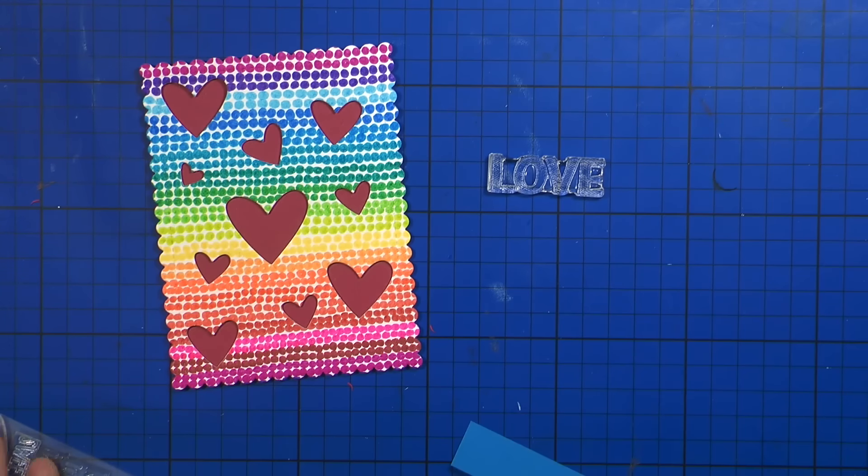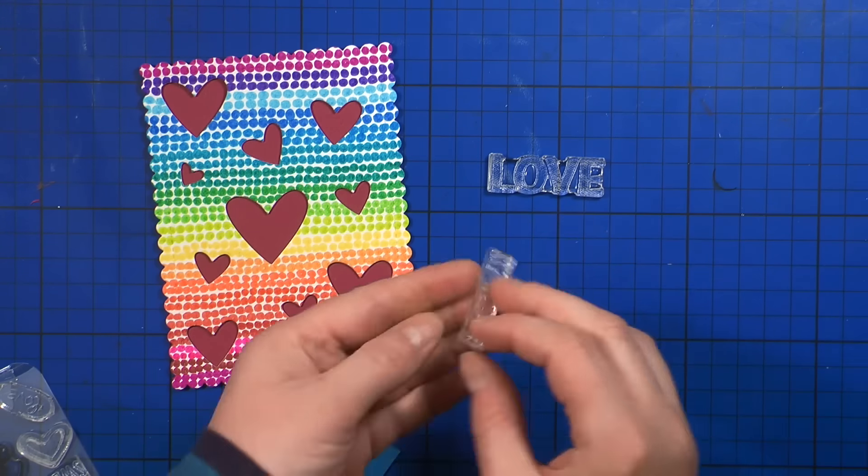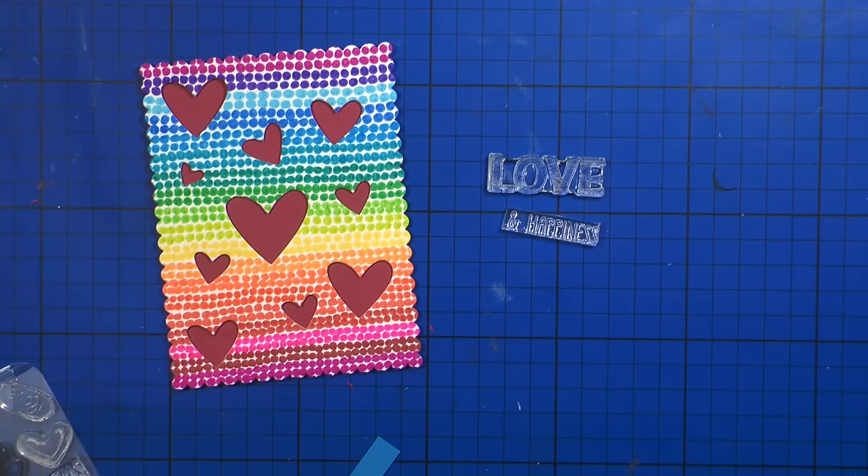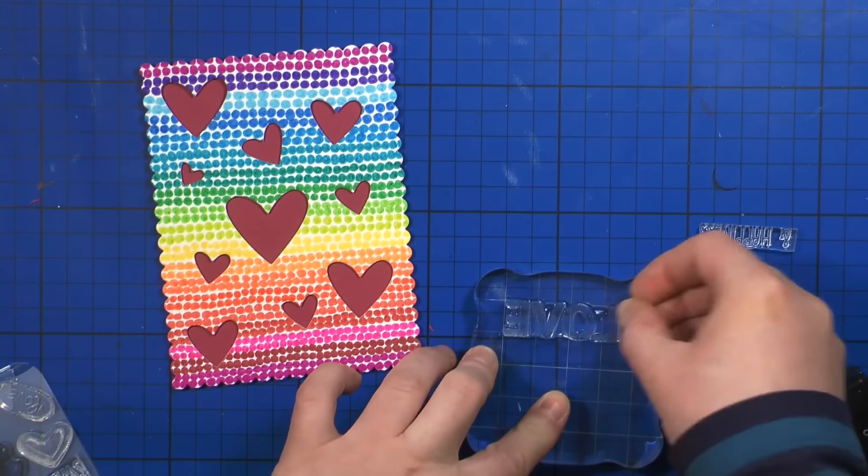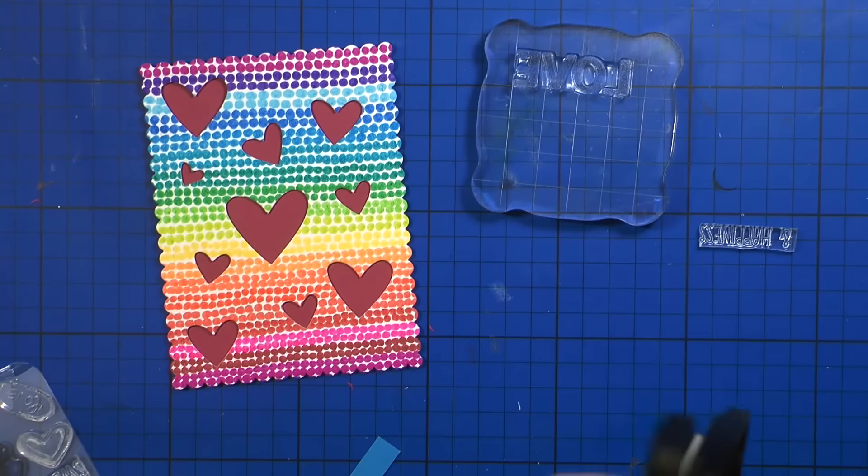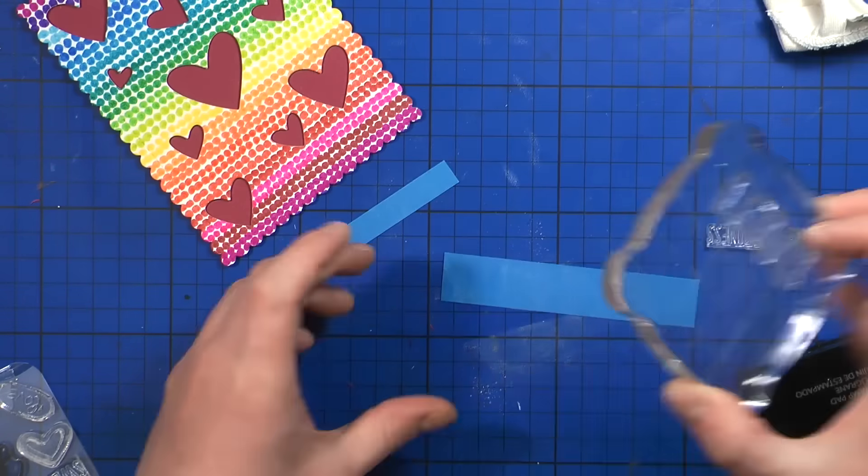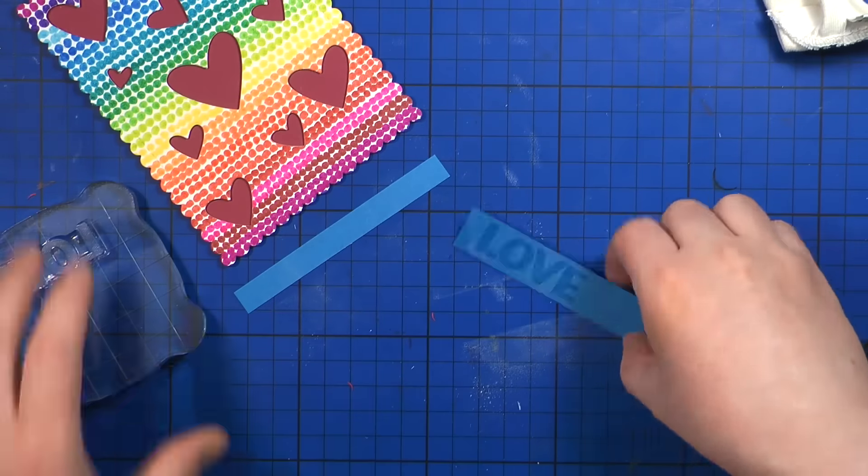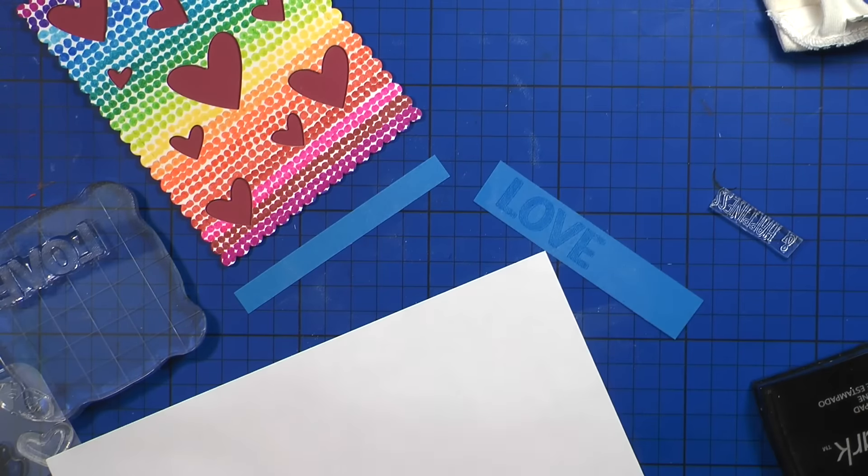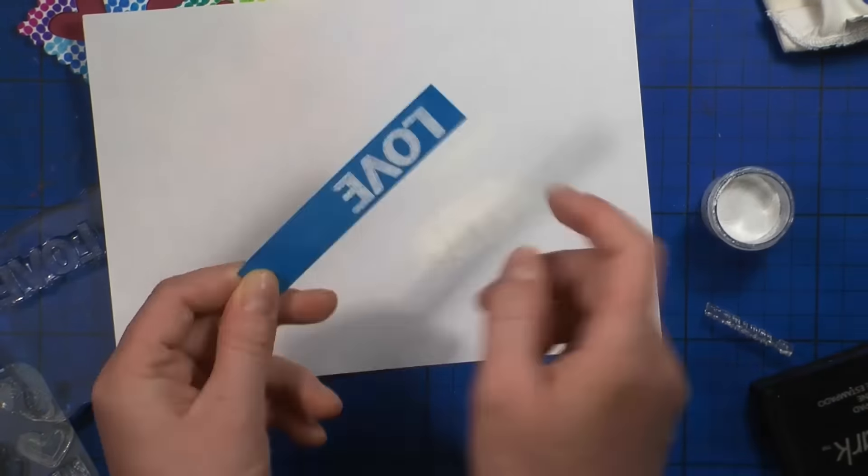Now back to the first card. I'm using the same stamp set for the sentiment. And I'm going to stamp Love and Happiness. And I'm going to heat emboss the sentiment on the blue cardstock. To stamp my words, I'm using VersaMark clear sticky ink. It's a perfect ink for heat embossing. And then I'm going to use some WOW white opaque embossing powder to heat emboss it.